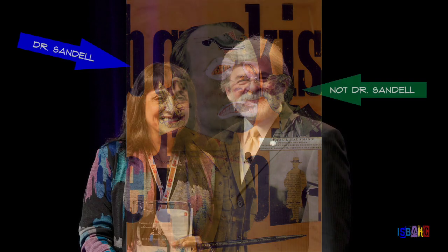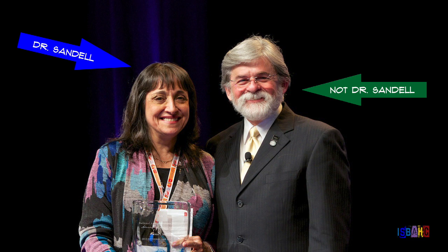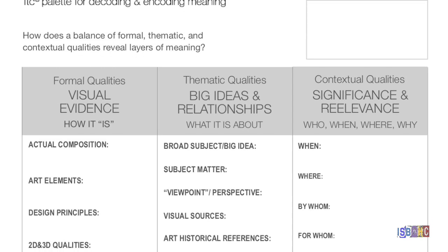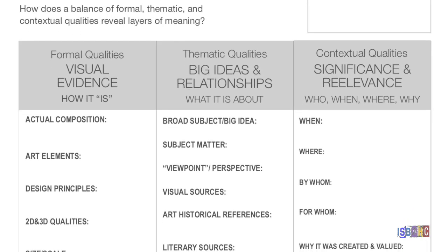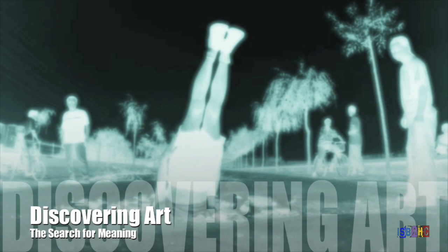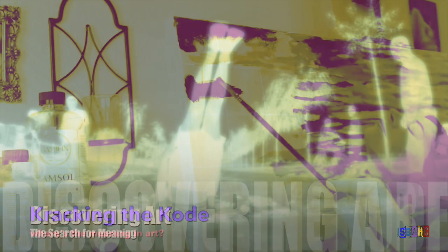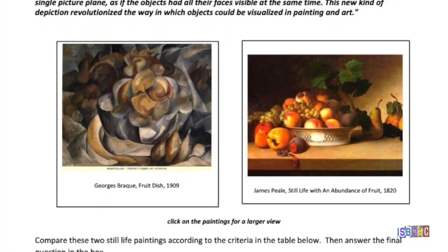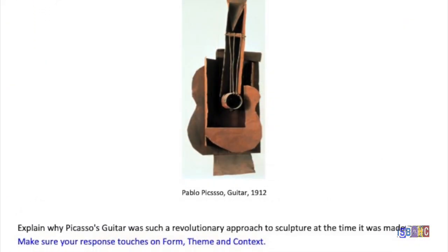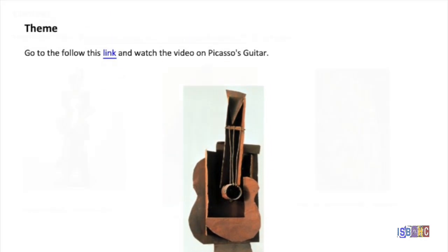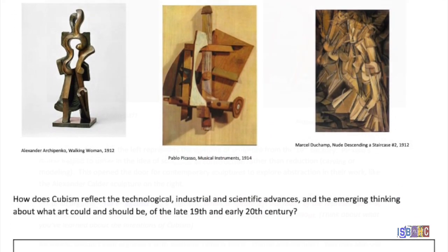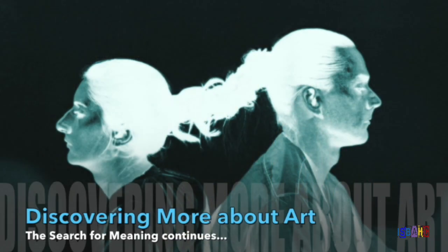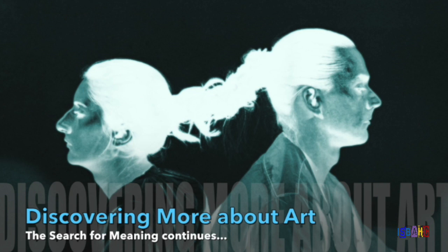These videos are based on the way of decoding art developed by Dr. Renee Sandel using Form, Theme, and Context, also known as FTC. Discovering Art to Search for Meaning and Cracking the Code introduce high school and middle school students respectively to how the integration of form, theme, and context are the key to discovering an artwork's meaning. After spending time practicing art analysis using FTC, students can move up to a more independent and sophisticated approach. Discovering More About Art is a video for advanced high schoolers that emphasizes the more mature synthesis of their art analysis.